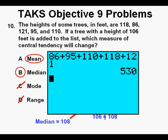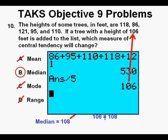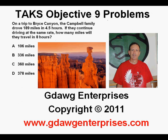To confirm, we calculate the mean by adding the five original numbers to get 530, then dividing by 5 to get 106. Since the mean is already 106, adding another tree of 106 feet will not change the mean — cross off answer A. The median is indeed what changes. This has been Tax Objective 9 Problems. Thanks for viewing.